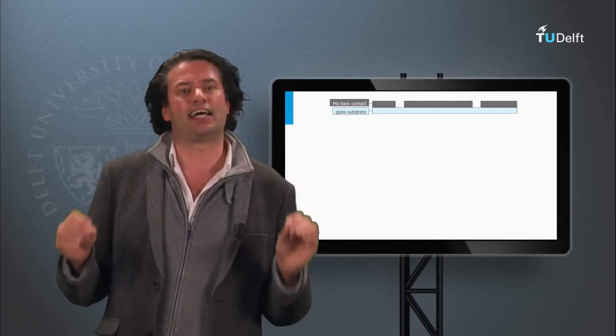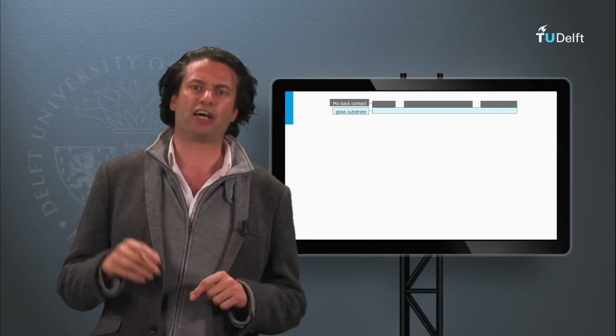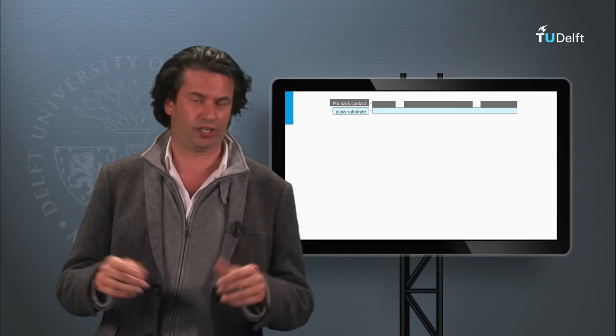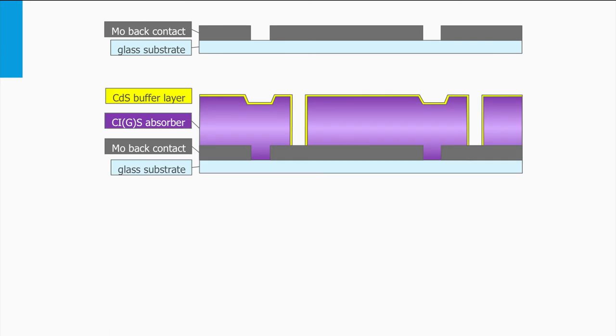CIGS cells in a module are similarly interconnected as we have seen for thin film silicon cells discussed earlier. First, the molybdenum back contact is deposited on top of the glass substrate and the cell areas are defined by laser scribes. Then, the CIGS p-layer and cadmium sulfide n-layer are deposited including a laser scribes step.